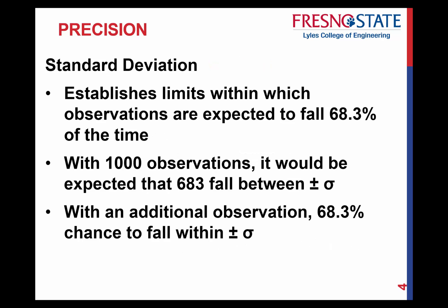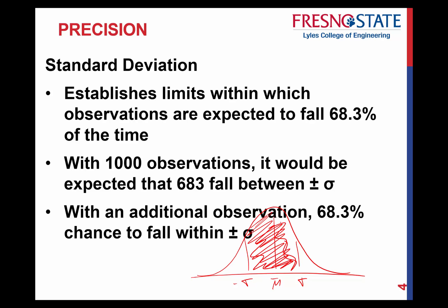In practical terms, the standard deviation establishes the limits within which observations are expected to fall. Within one standard deviation, that's about 68.3% of observations. So if you look at a normal curve with the mean at center, plus and minus one standard deviation captures 68% of all observations. That means if you took 1,000 observations, you'd expect 683 to fall within plus or minus one sigma.